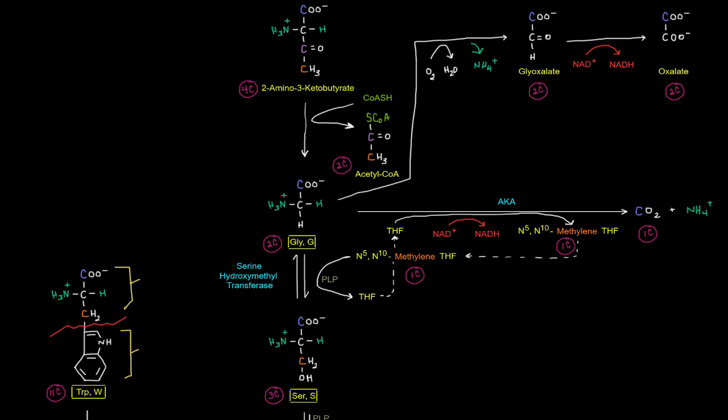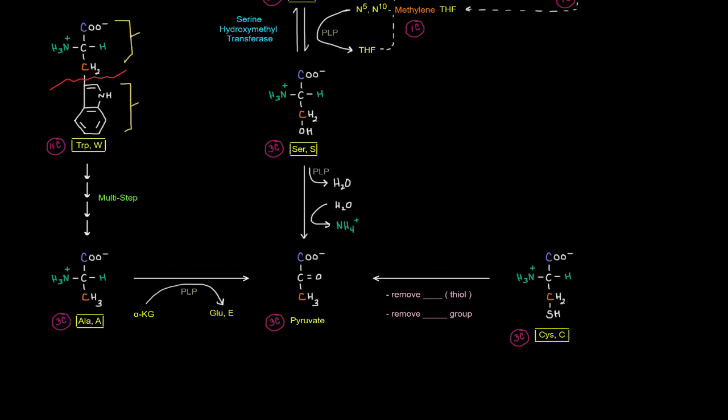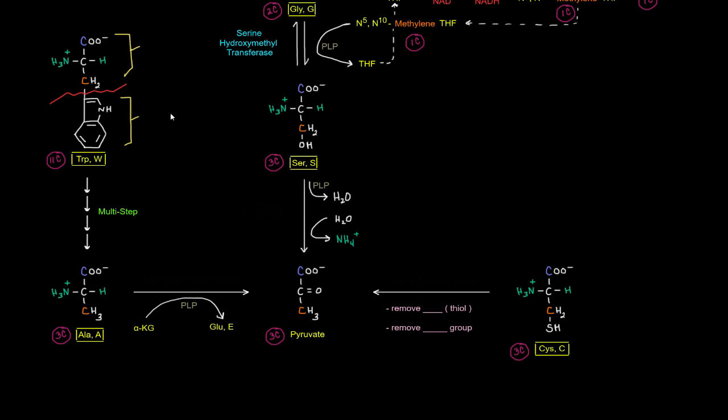So that gives us serine. And that serine can undergo the serine dehydratase reaction to basically get rid of this OH group and the amino group here and the alpha hydrogen. And that gives us pyruvate. So we're good as far as threonine, glycine, and serine giving rise to pyruvate.